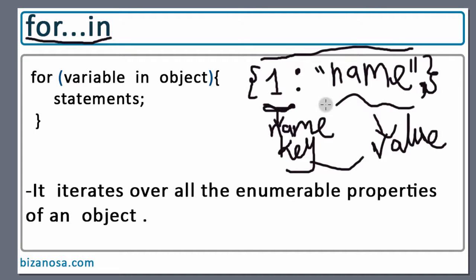So the for...in will iterate over the properties, and it iterates over enumerable properties. So by default, when you create properties, everything you create will be enumerable. So that's basically, in simple terms, countable. When you're creating properties...